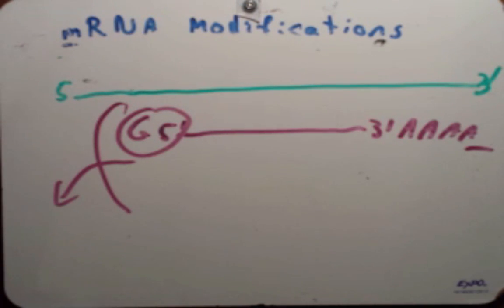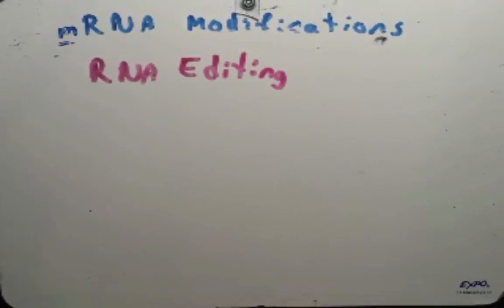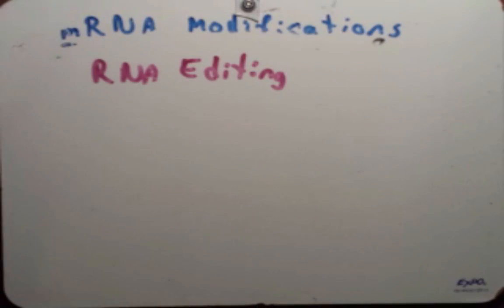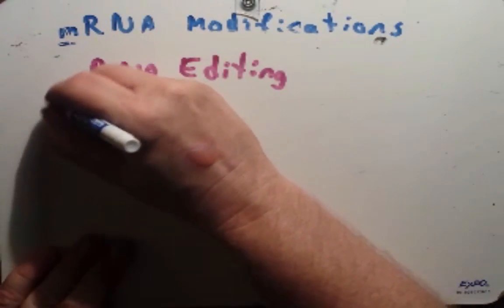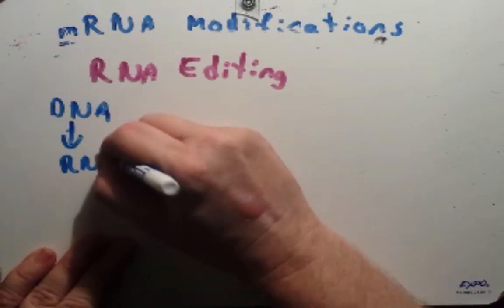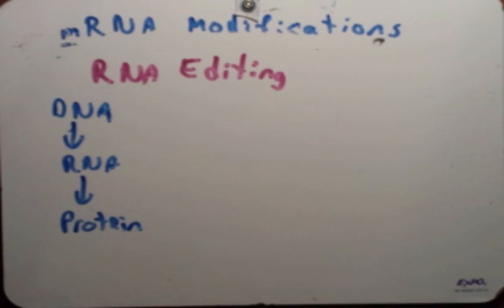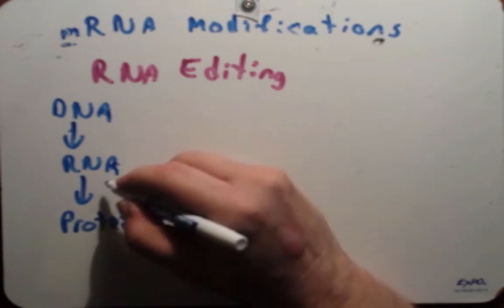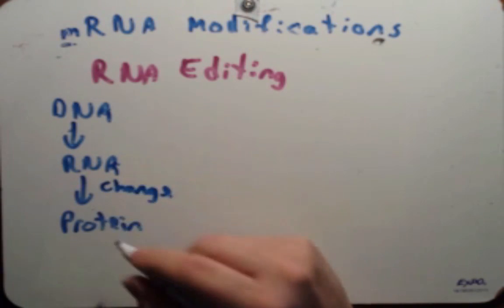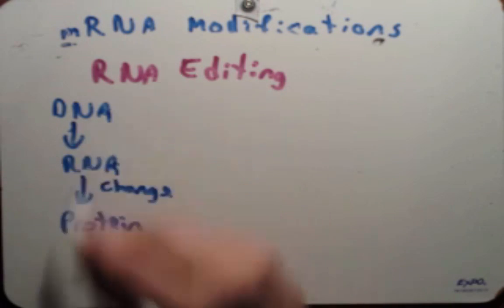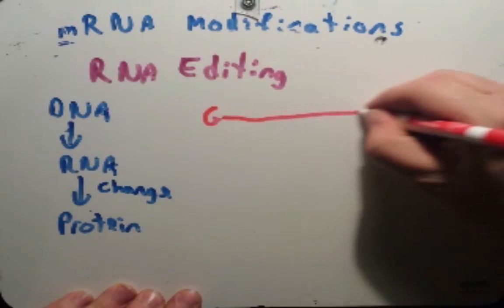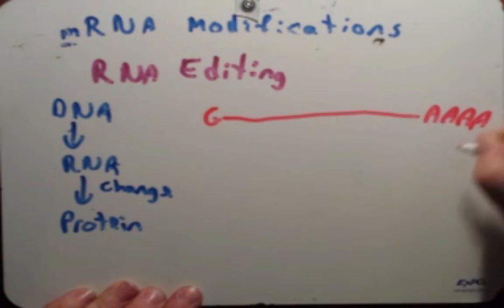Now there's one last thing we need to talk about and that is this thing called RNA editing. Now this idea really put the central dogma to a test, because remember the central dogma says you start off with DNA, the DNA codes for an RNA, and now that RNA makes a protein. What RNA editing does is says that we get this RNA that's coded by the DNA and now we're going to change it, we're going to edit it in such a way that we make a protein that is different than what the DNA codes for. So this was really revolutionary.